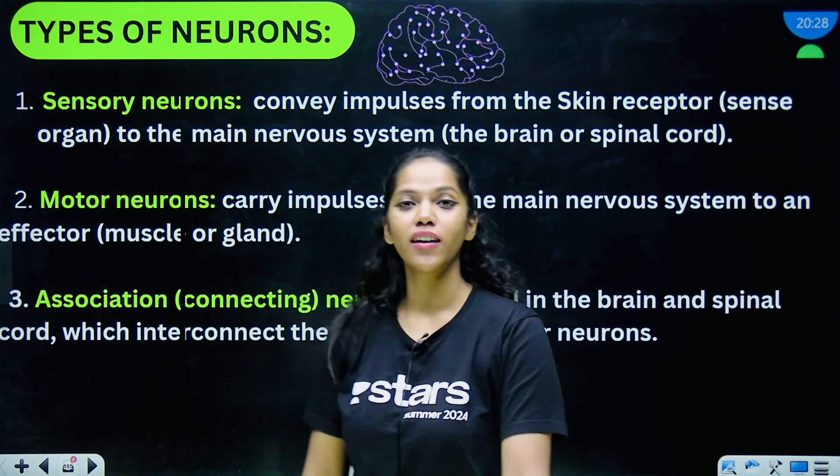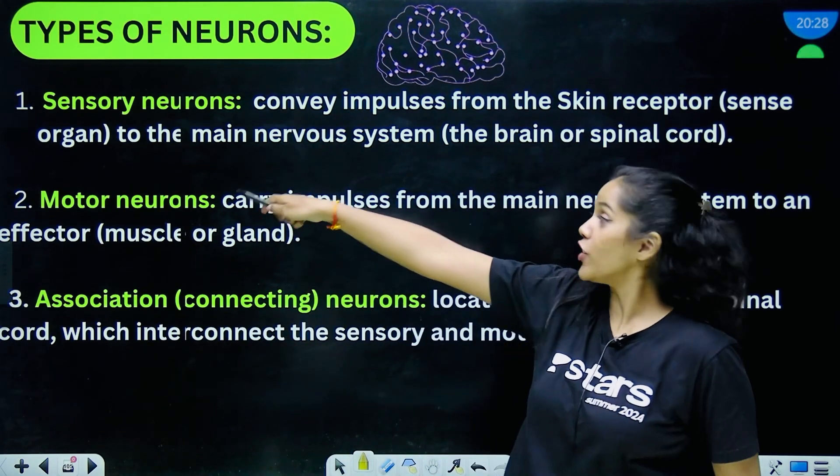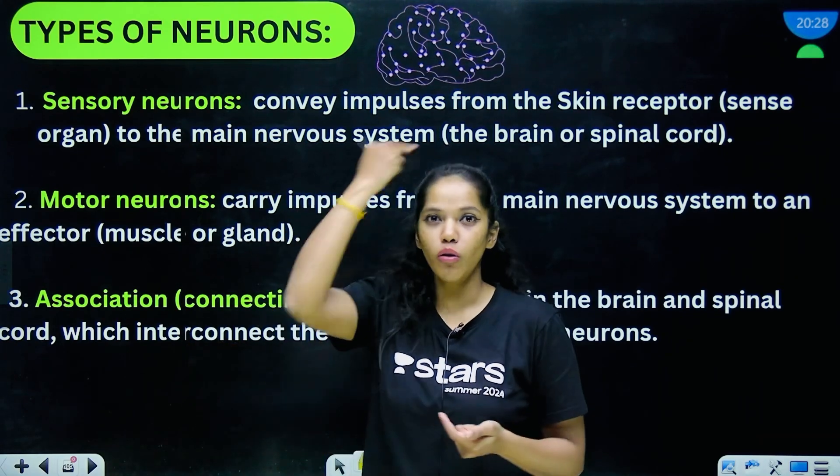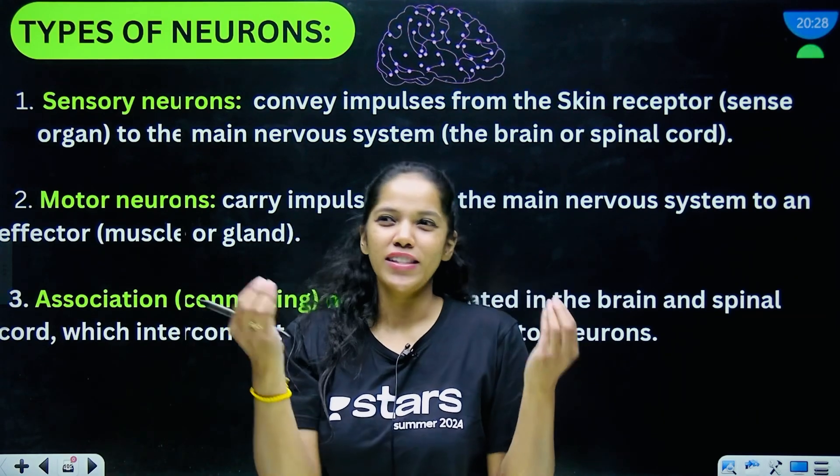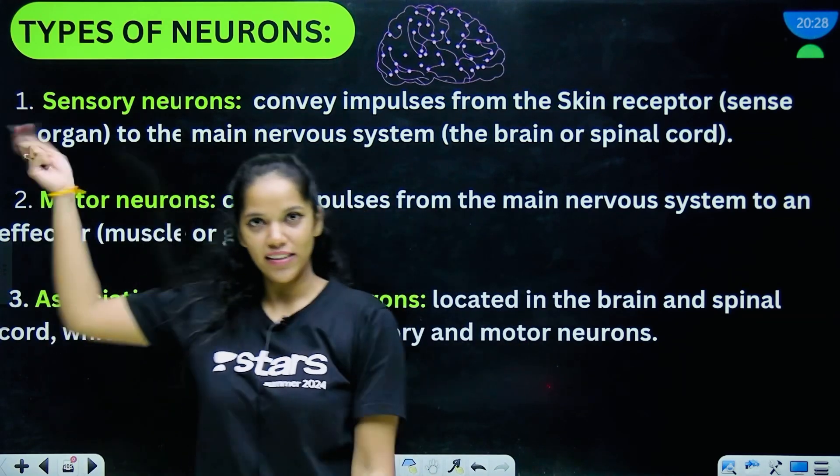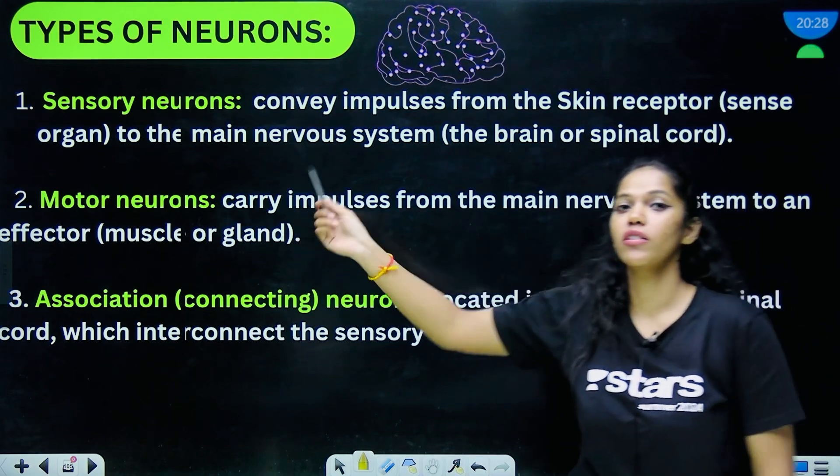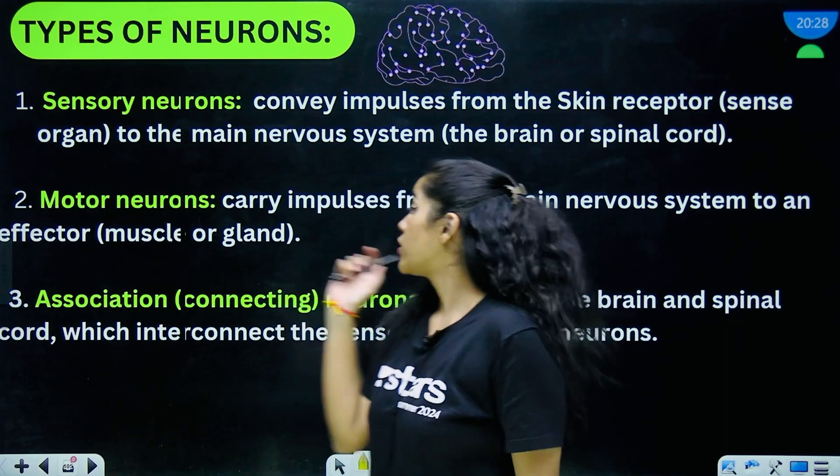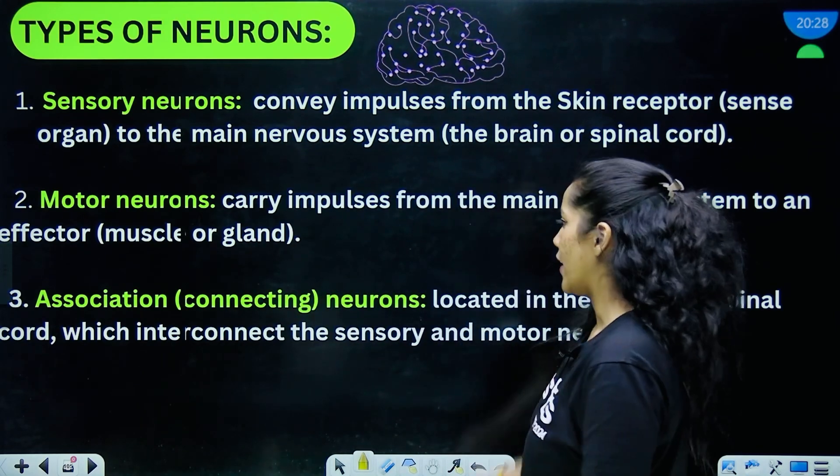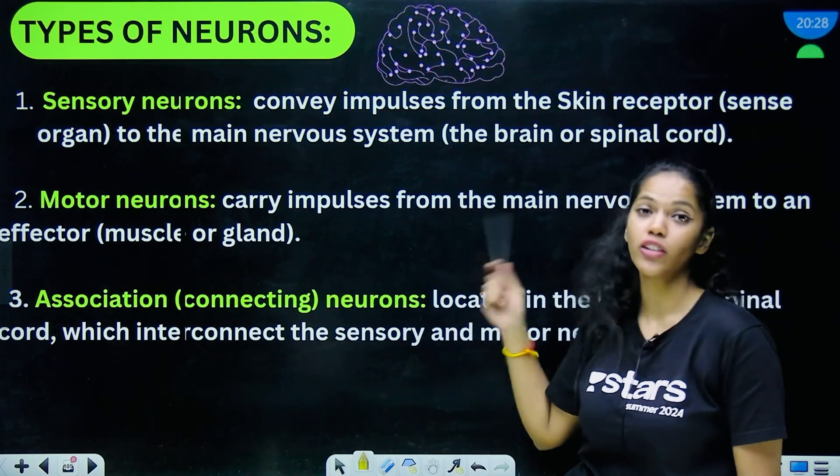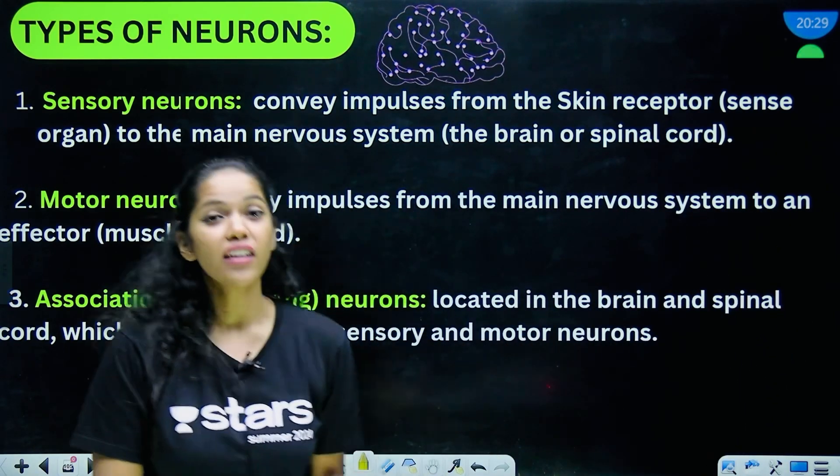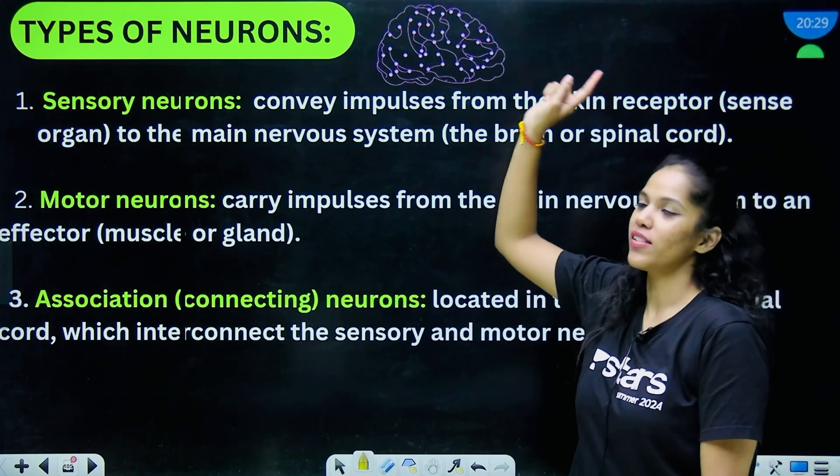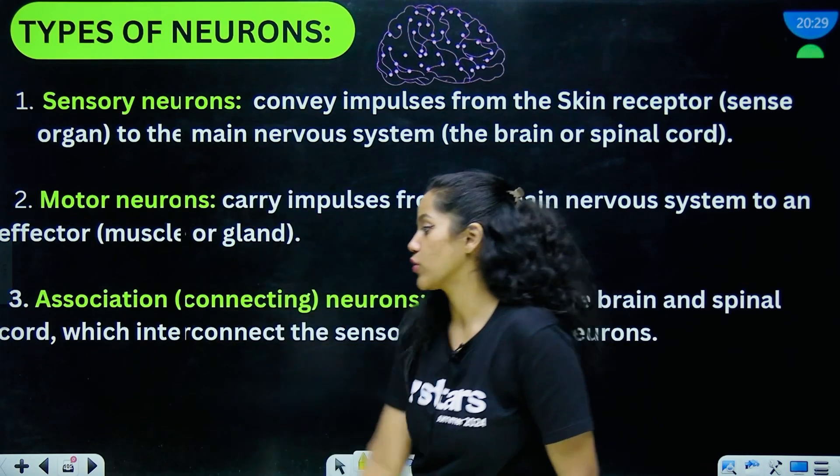Types of neurons. There are three main types of neurons which is the sensory neuron that conveys impulses from the sense organ, like my skin if I touch something hot that message is going to go to my nervous system—that is the brain and the spinal cord—through the sensory neurons. And we have the motor neurons that send neural impulses from the main nervous system to the effector, that is the muscle or the gland. And then we have the association, that is the connecting neurons, that serves as an interconnection between the sensory neurons and the motor neurons.